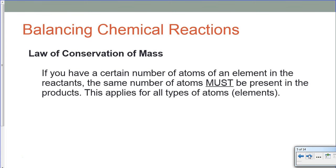So, if you have a certain number of atoms of an element in the reactant side of a chemical reaction, the same number of atoms must be present on the product side as well. This applies for all types of atoms, elements, compounds, anything like that.